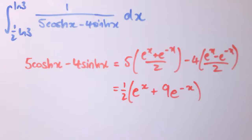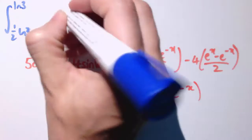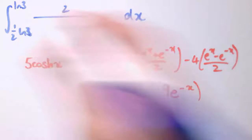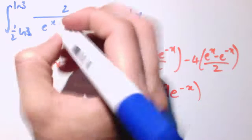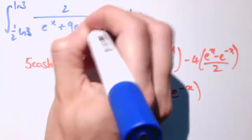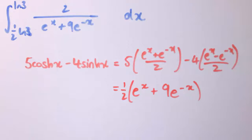So the integral here is just 1 over this. So let's rewrite that as 2 divided by e^x plus 9e^(-x). And now we've got that.